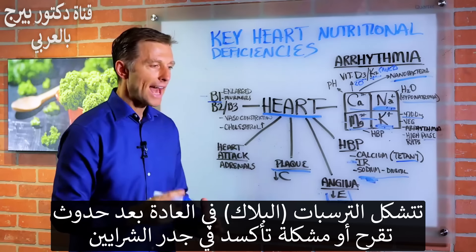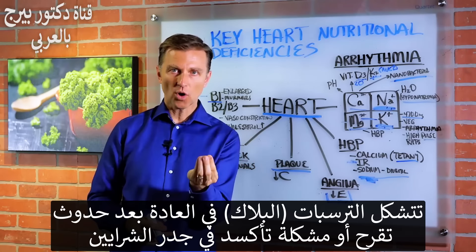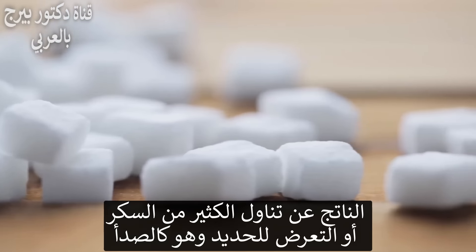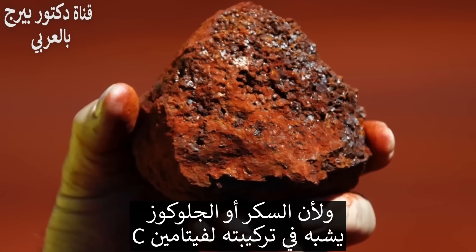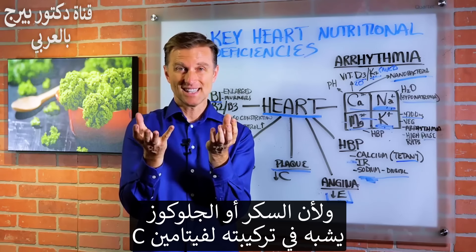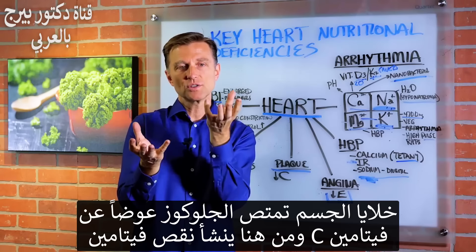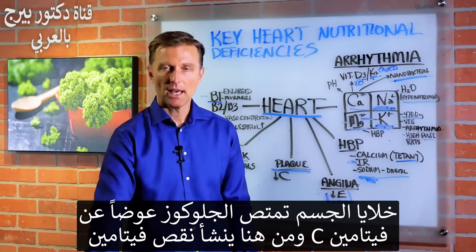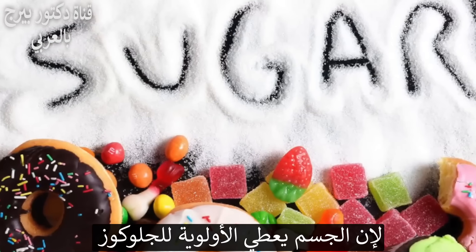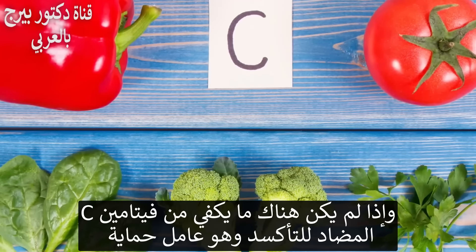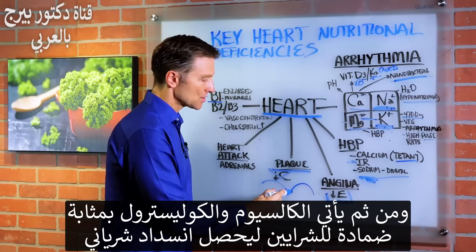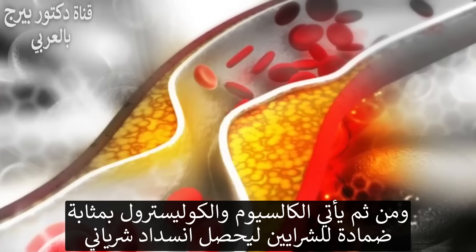Plaquing usually develops after a lesion or oxidative damage to the artery wall because the person is consuming too much sugar or is exposed to excess iron, which acts like rust. Glucose and vitamin C are very similar in chemistry — if there's glucose in the system, the body absorbs that instead of vitamin C, creating a vitamin C deficiency. Without enough vitamin C as an antioxidant, you get oxidation damage to the artery wall, then comes the calcium and cholesterol as a band-aid, and you start getting a clogged artery.